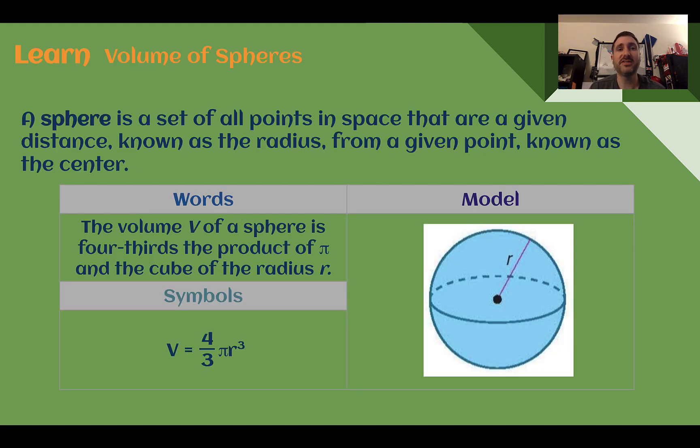Let's learn volume of spheres. A sphere is a set of all points in space that are a given distance, known as the radius, from a given point known as the center. In our picture here, we can see that the radius is going in three dimensions, going every which way towards the end, forming our ball shape, our sphere.